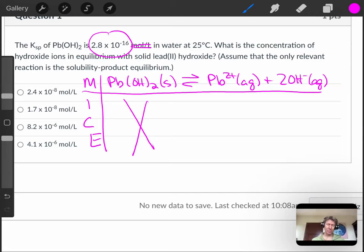Solids don't appear, and we start with zero of both of our reactants. We have a plus x here and a plus 2x for our hydroxide. And then that's going to be x and 2x.